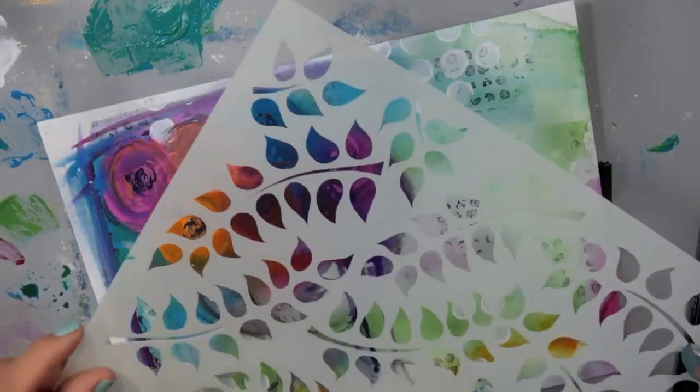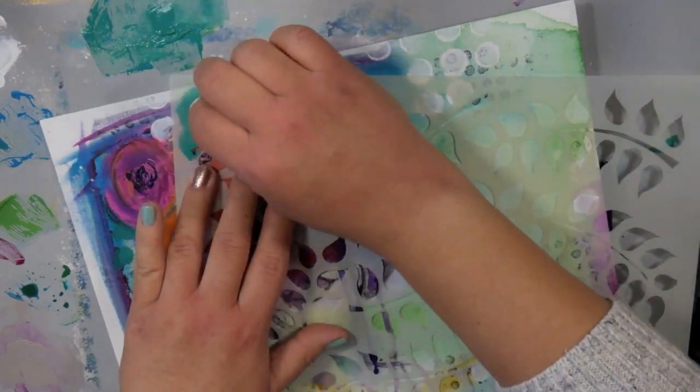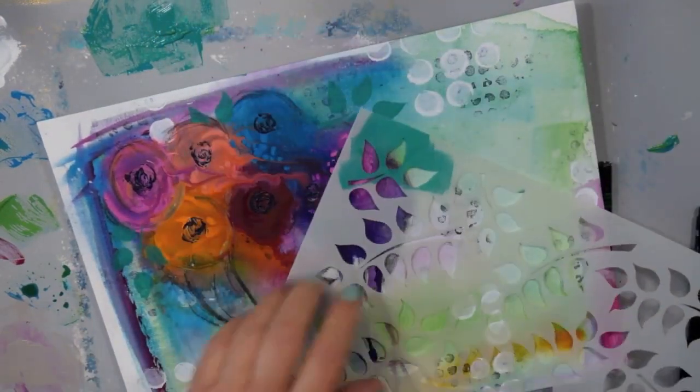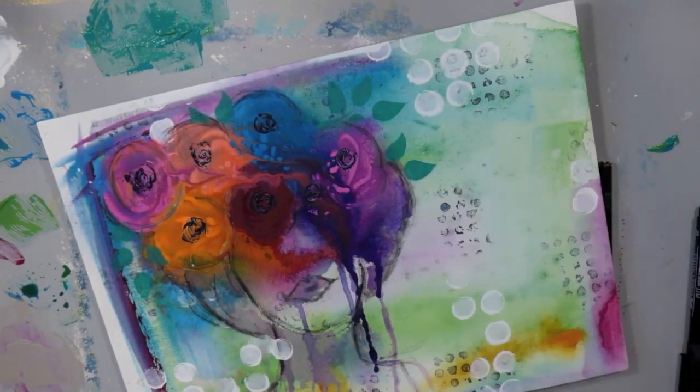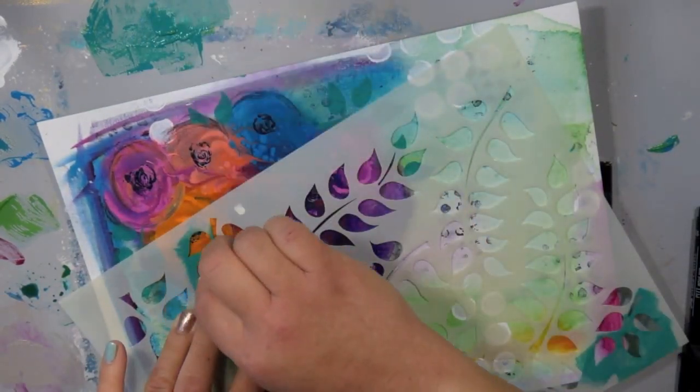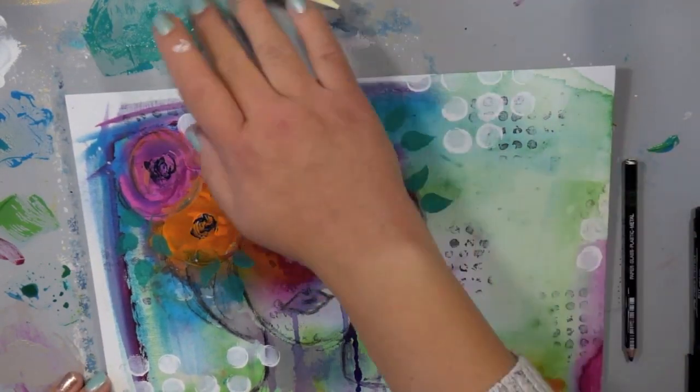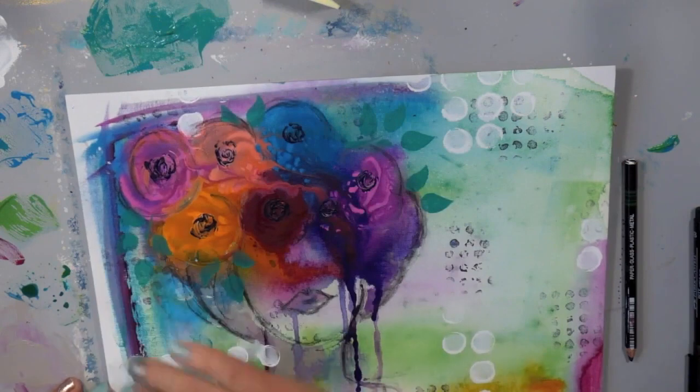So I'm bringing in this stencil. It's a dilution stencil and I mixed the Evergreen and the Ocean colors together. They make such a beautiful teal color and I'm sponging in just some leaves around the flowers to add some more interest and kind of just make that really pretty crown of flowers on her head.